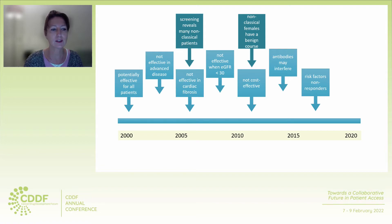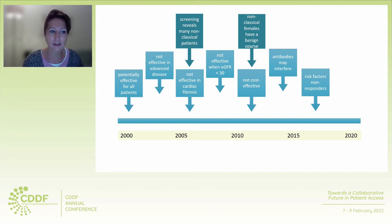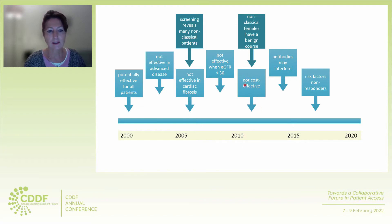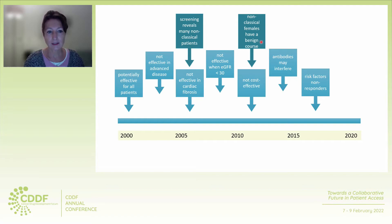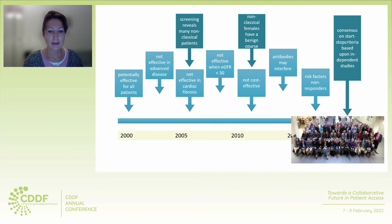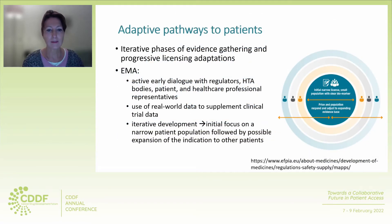What I show here is what happened between 2001 and all the years after. Initially, we thought it was potentially effective for all patients. Then it was perhaps not effective in advanced disease — maybe not in patients with cardiac fibrosis or renal failure. Then studies showed it was not cost-effective. We also found that antibodies may interfere and there are certain risk factors for non-responders. Screening studies revealed many non-classical patients. We found that non-classical females have a very benign course. It took 20 years for a good independent consensus on start and stop criteria based upon independent studies.